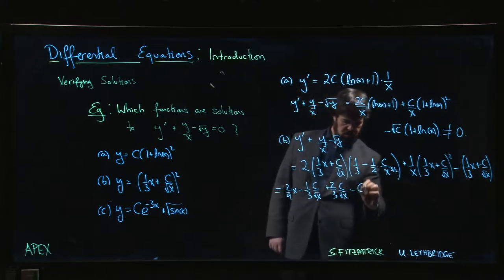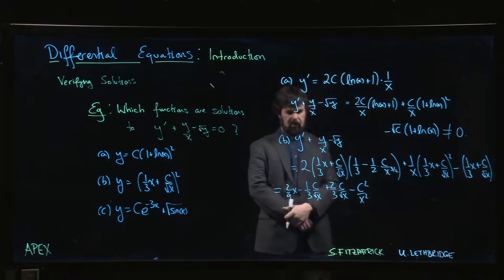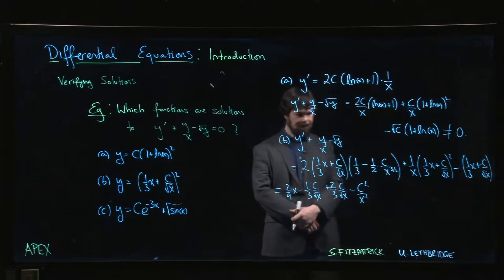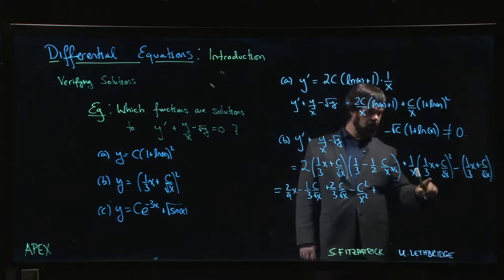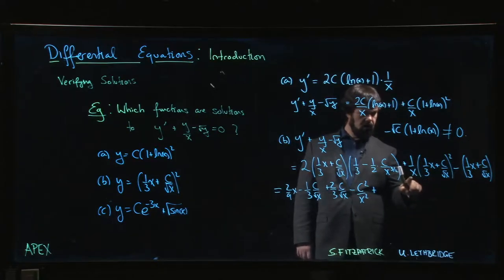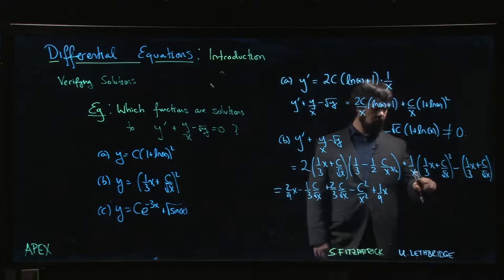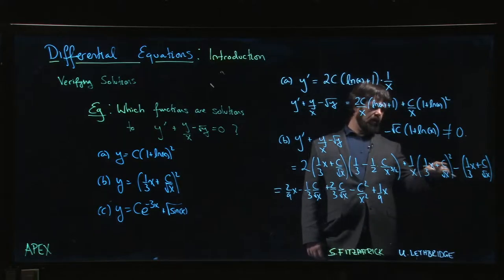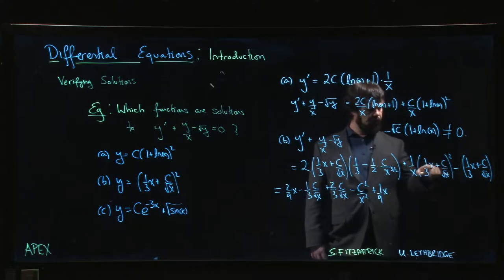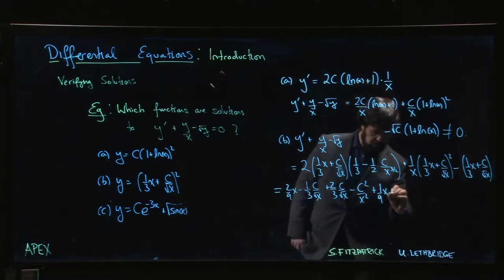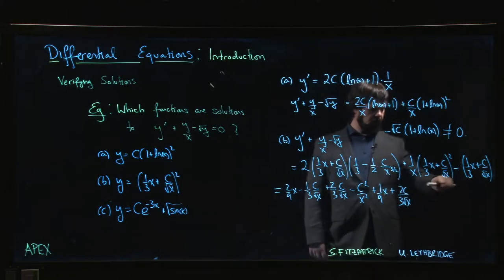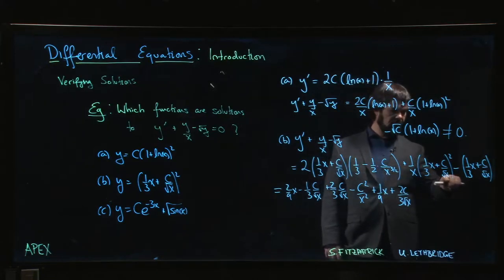Plus we keep going - square this out: 1/9 x squared times 1 over x gives me 1/9 x. Cross term is going to be C root x over 3, and there's two of them, so 2C root x over 3 times 1 over x, and you get 2C over 3 root x. Square the last: C squared over x times 1 over x - that's C squared over x squared.